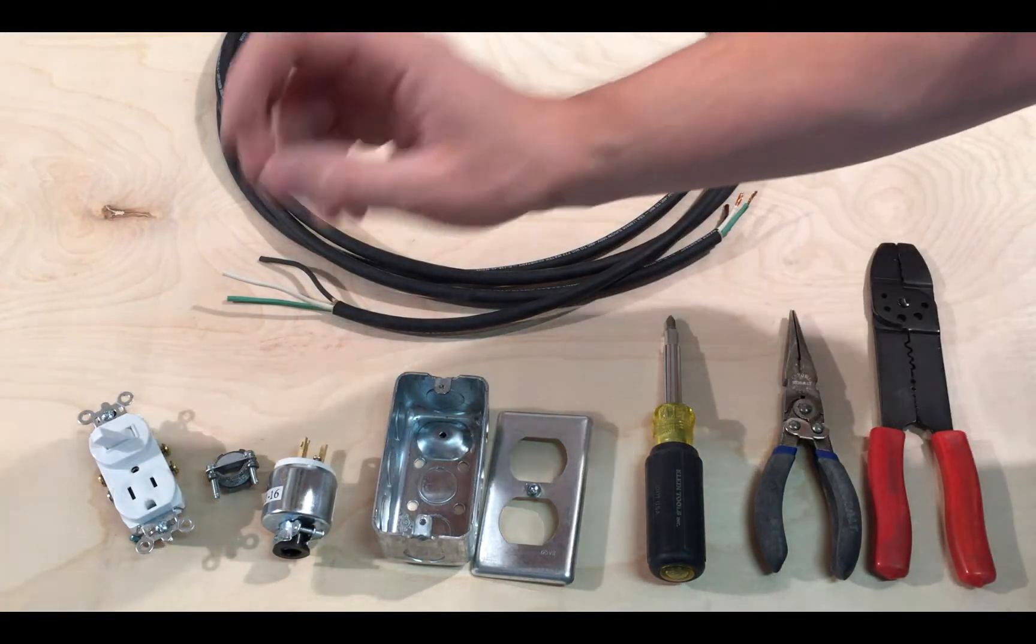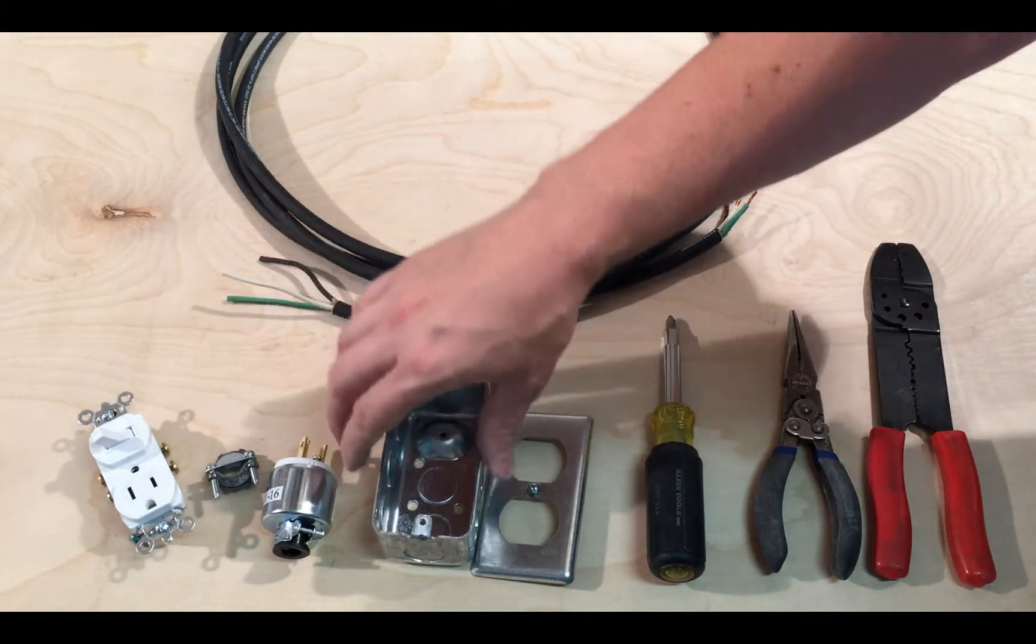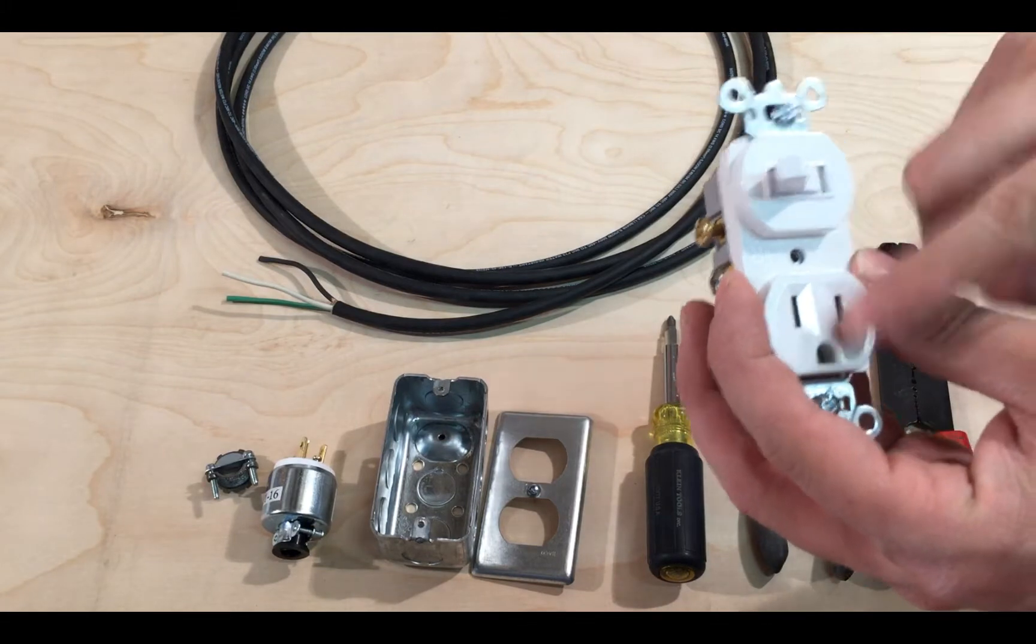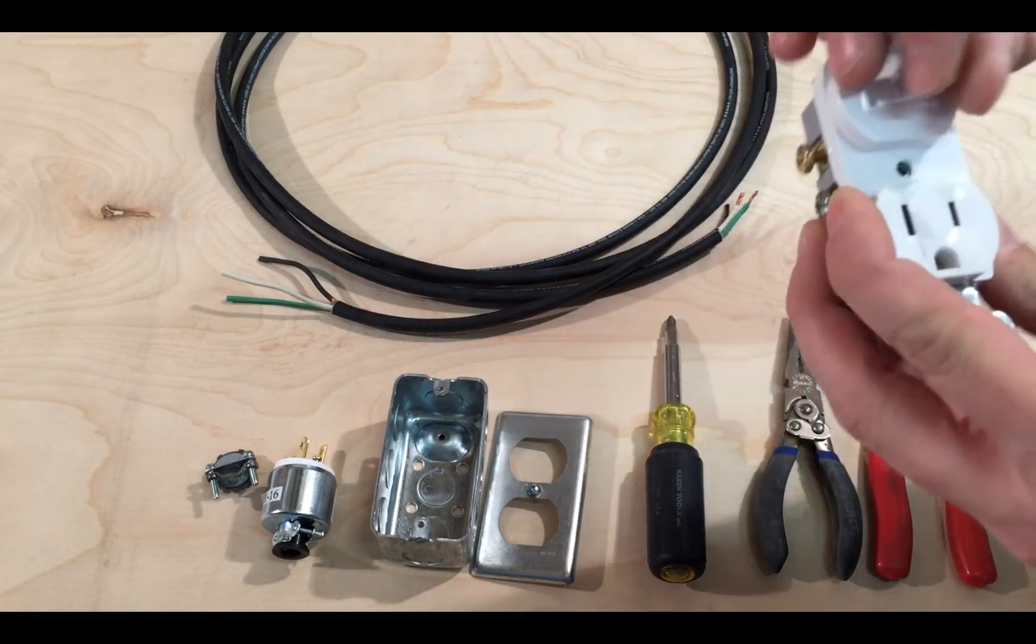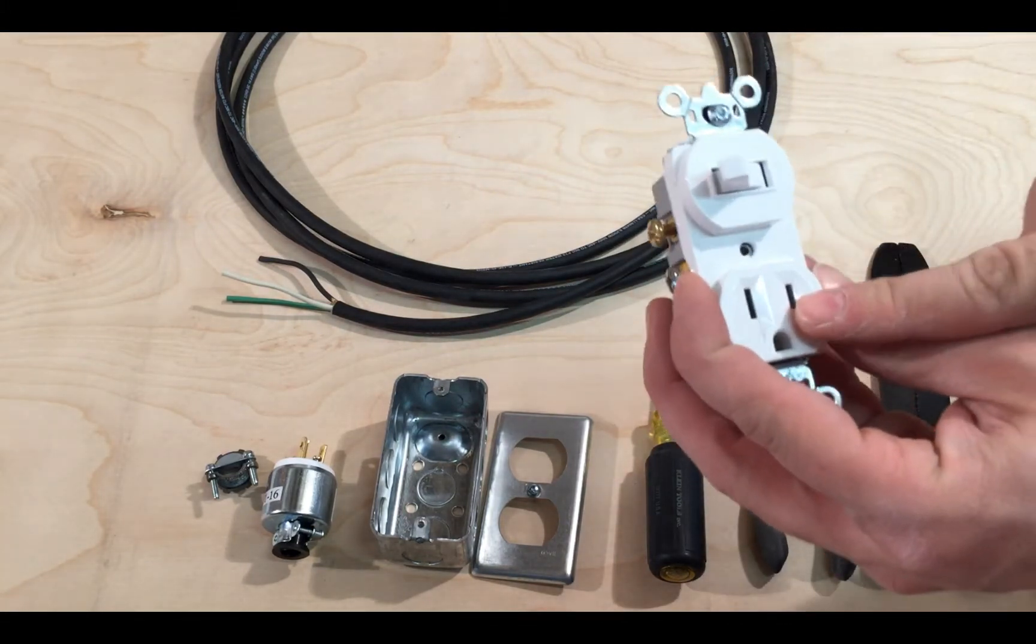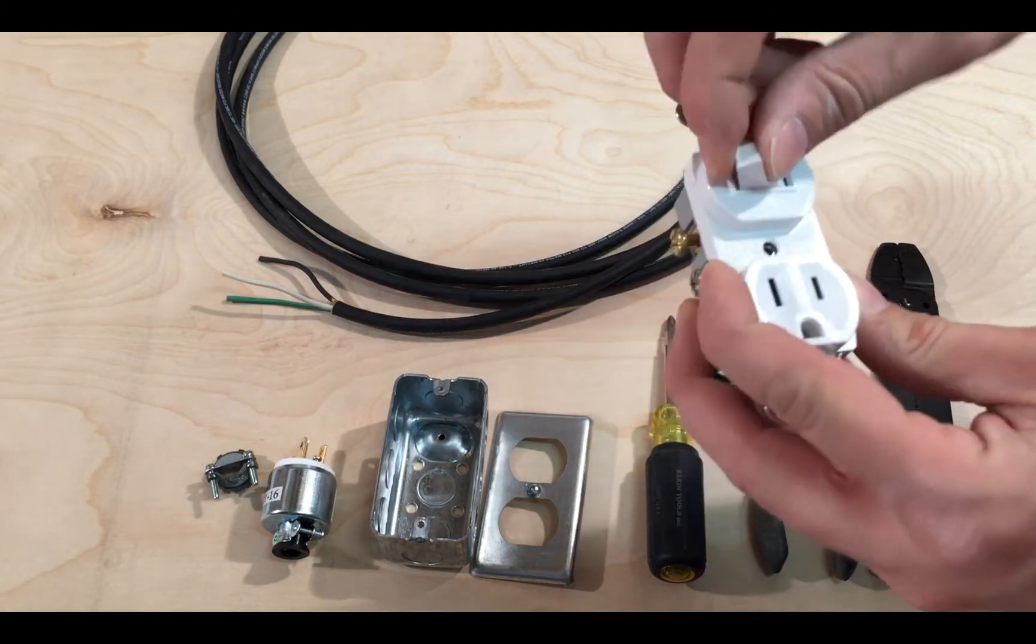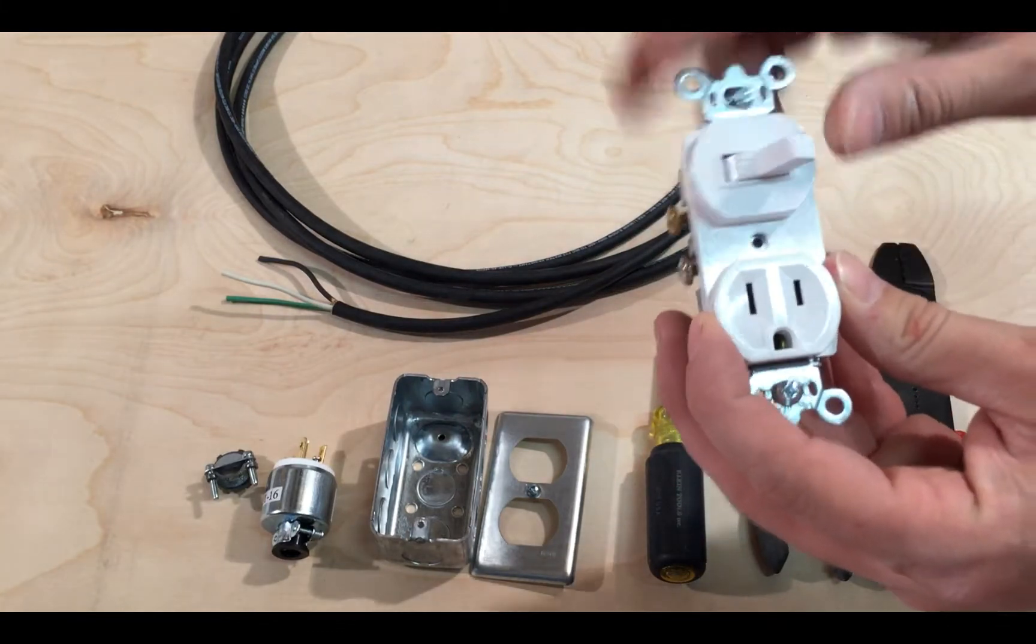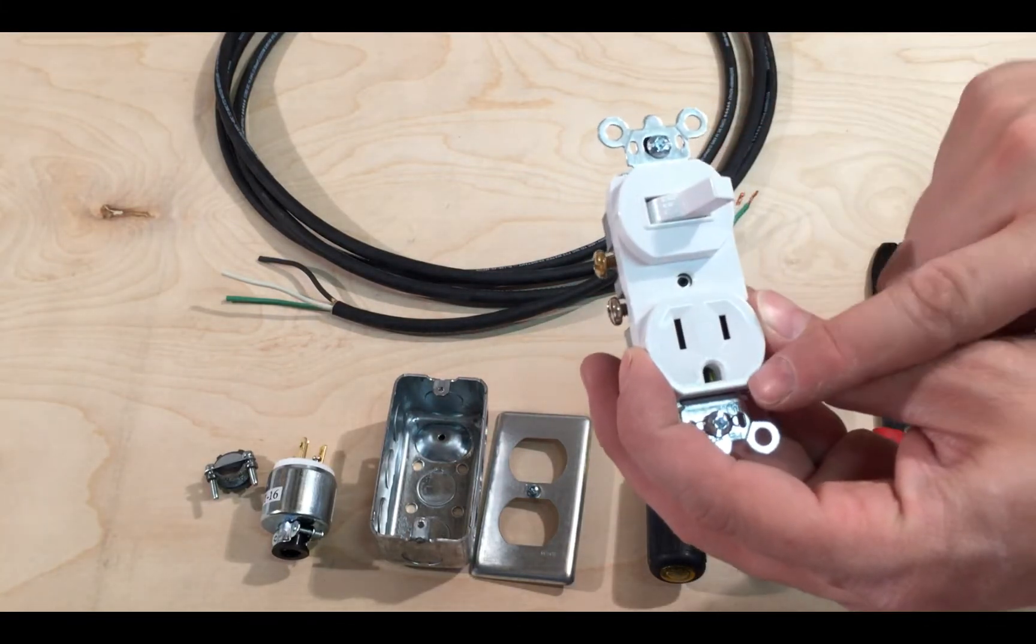First, we'll go over the switch. It's a combo. This doesn't have to turn this outlet on and off. This can actually turn on something else like another light, and then this is an outlet for its place. But I'm going to use it so this controls the outlet.